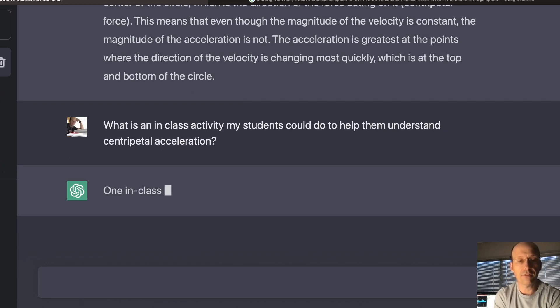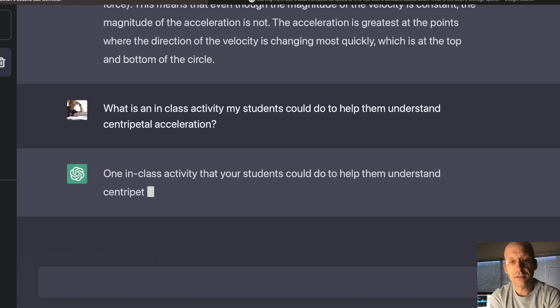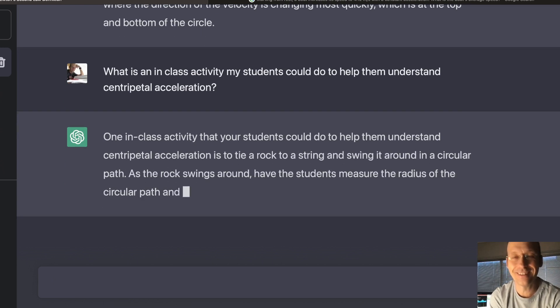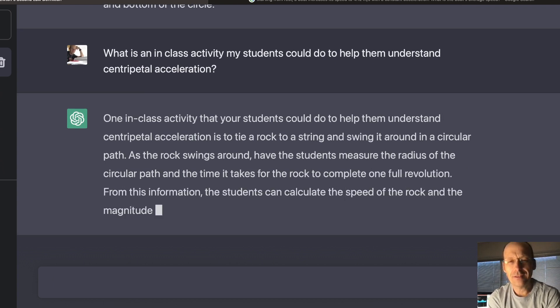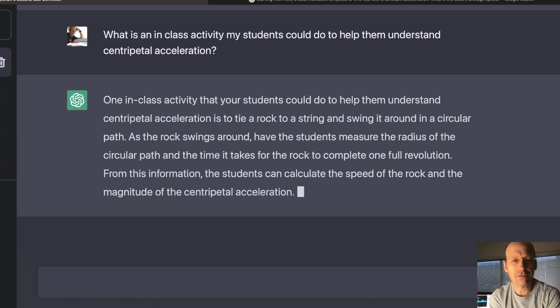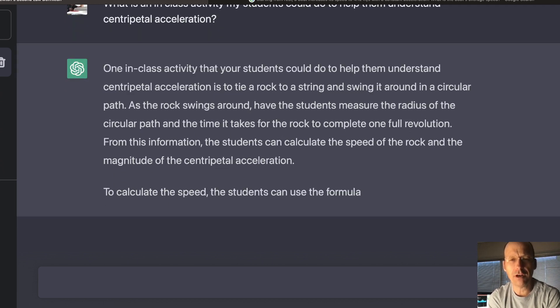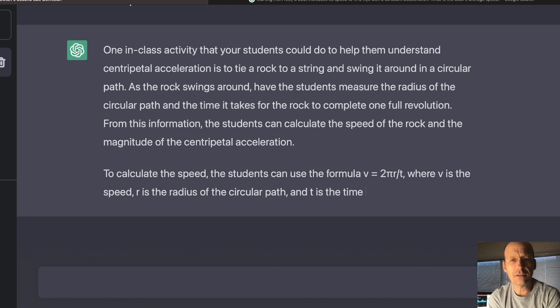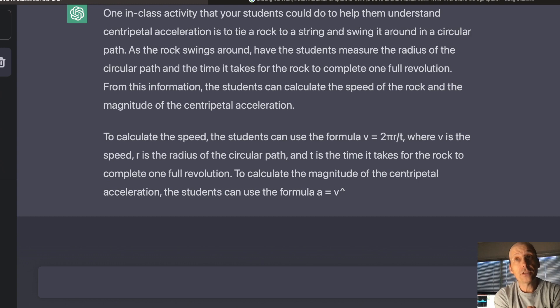This is curious. One in-class activity. Tie a rock to a, tie a rock. Don't do that. Tie a rock and swing it around in a circle. Have the students measure the radius of the circular path, and the time it takes for the rock to complete one full revolution. From this, the students can calculate the speed of the rock and the magnitude of the centripetal acceleration.